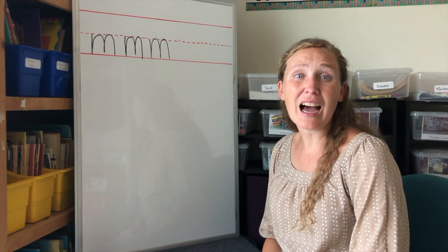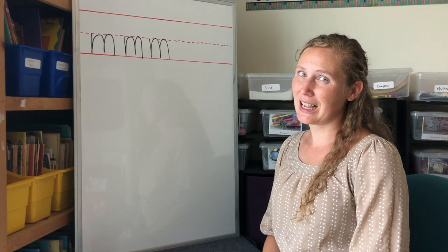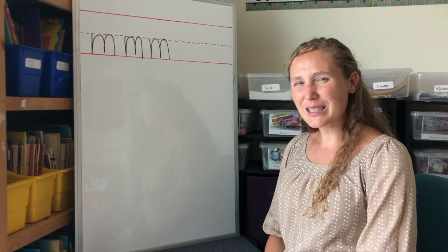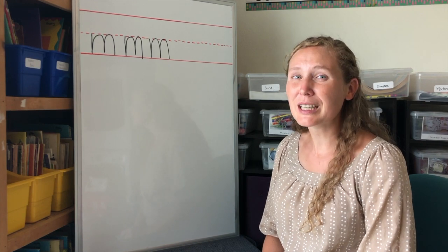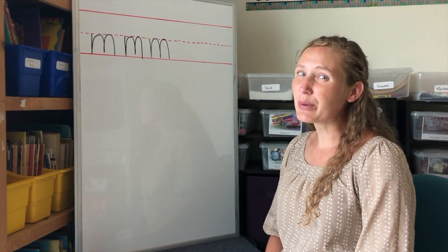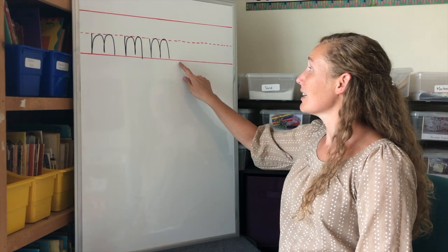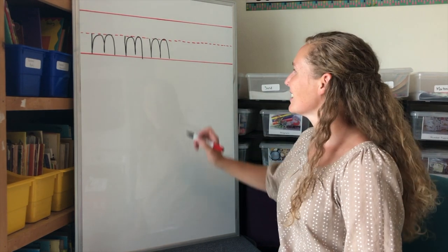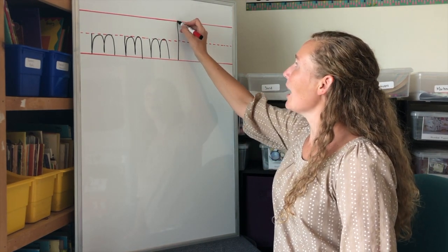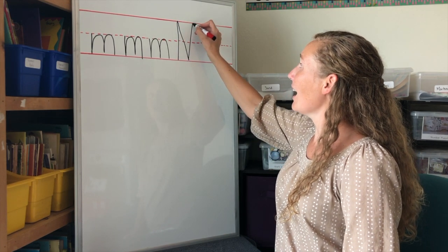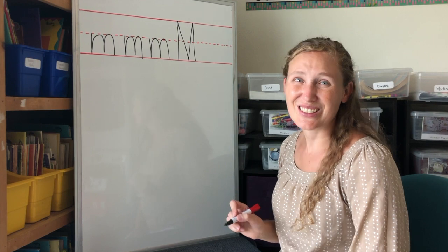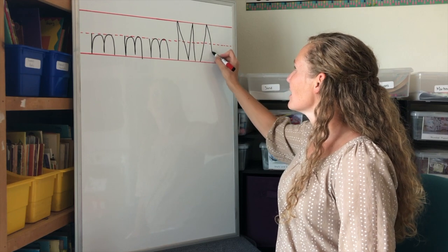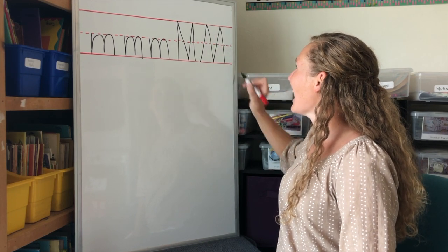Now let's make an uppercase M. Uppercase M is what we use for very important words like names. Let's do an uppercase M between the bottom solid line and the top solid line. Are you ready? Monkey jumps up, down, up, and down again. Monkey jumps up, down, up, and down again.